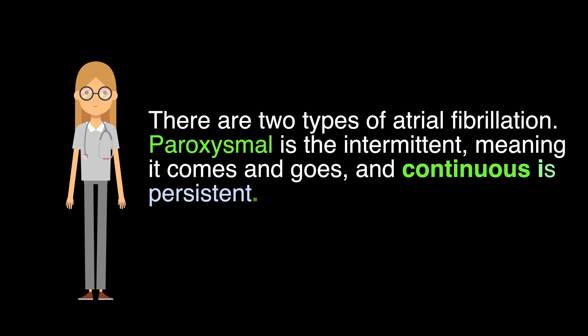There are two types of atrial fibrillation. Paroxysmal is intermittent, meaning it comes and goes, while continuous is persistent.